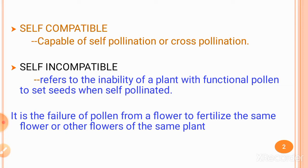So what is meant by self-incompatibility? It is the opposite of self-compatibility. Self-incompatibility refers to the inability of a plant with functional pollen to set seeds when self-pollinated, or the failure of pollen from a flower to fertilize the same flower or other flowers of the same plant. If you use pollen from the same plant and it is unable to set seeds, that condition is called self-incompatibility.